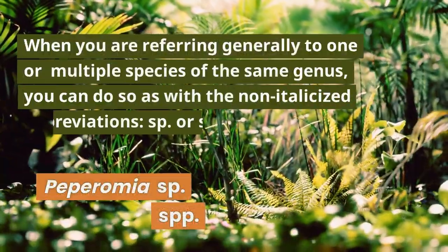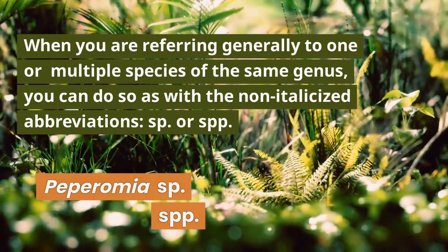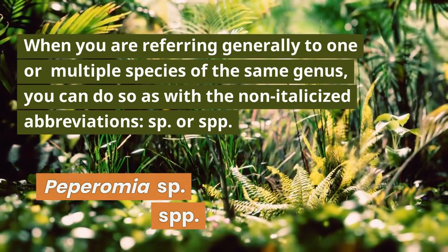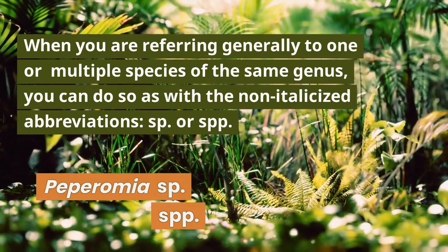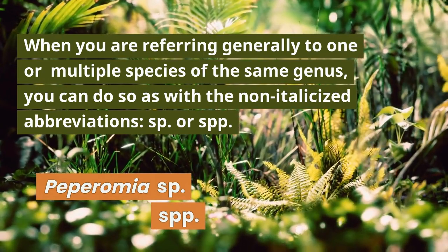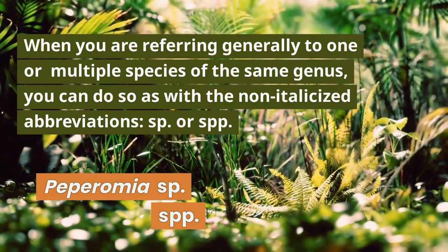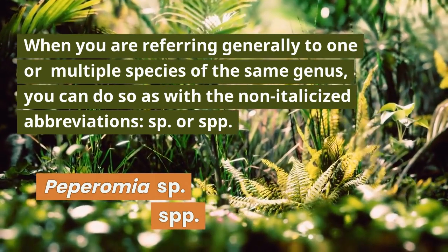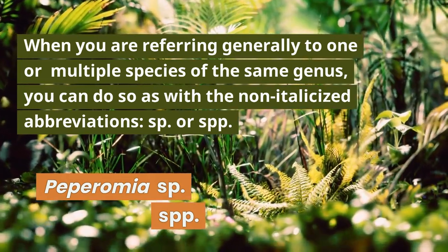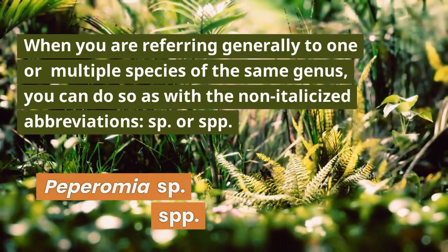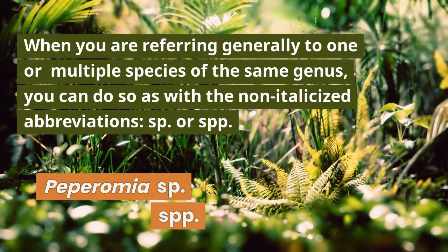When referring generally to multiple different species within the same genus, you can use the non-italicized abbreviation 'spp.' For example, if you're referring generally to the care of a number of different Peperomia species but don't want to list each individual Latin binomial, you can simply write the genus — uppercase P, Peperomia, italicized — followed by the unitalicized abbreviation spp. That denotes multiple species. You can also use the same notation if you know a plant is in the genus Peperomia but don't know the specific epithet — Peperomia, capital P, italicized, followed by the non-italicized abbreviation sp. That notes one species.